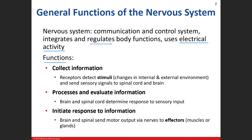Remember: receptor, control center, effector — that's homeostasis. Now we're going into a little bit more detailed description of it. We have to have receptors to collect information. A receptor is going to be something that monitors a change in the internal or external environment. That change is called a stimulus. You have to have some sort of change for that receptor to detect, and then it sends information about what it found to the control center.